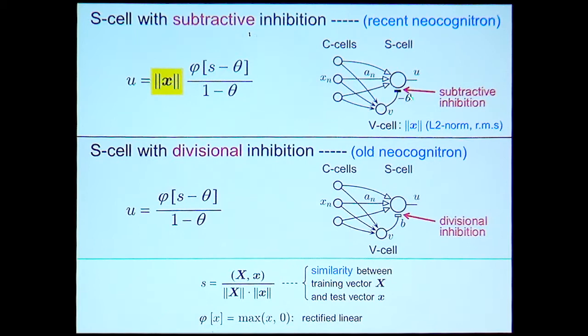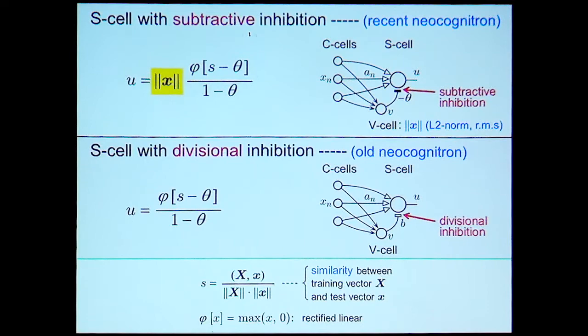In the Neocognitron, we have two types of inhibition. In the original Neocognitron, divisional inhibition was used, where the output of the cell is given by a rectified linear function phi of similarity S between the training vector and test vector. In the recent Neocognitron, we use subtractive inhibition instead.